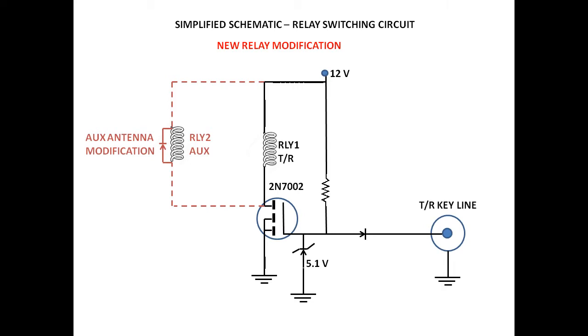To do the switching, the control line is simply pulled low by the keying relay in your rig, and when it does, it engages the relay.